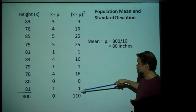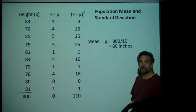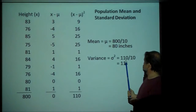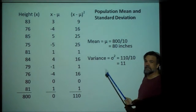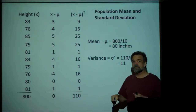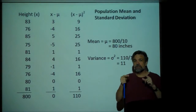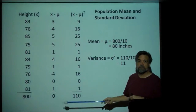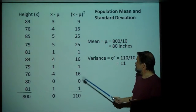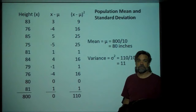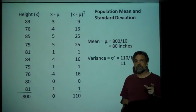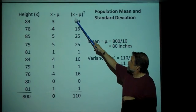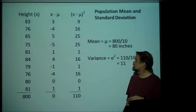And so, you add all those up to get 110, and then if you divide that by 10, you get 11. So this is the average squared difference between each of the data points and the mean. And that is what the variance is — the variance is the average squared difference between each data point and the mean.